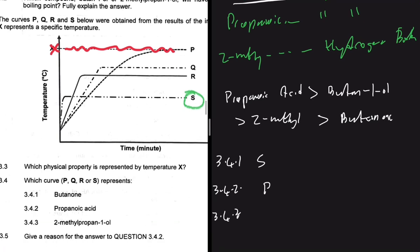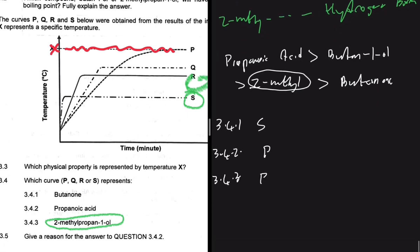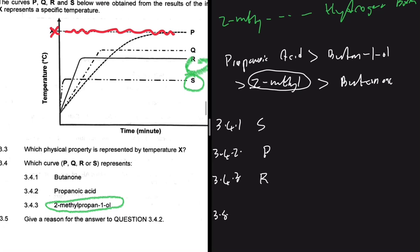For 3.4.3: 2-methylpropan-1-ol should be the one second from the bottom. Since S is butanone, compound R should be 2-methylpropan-1-ol. So compound R is 2-methylpropan-1-ol.